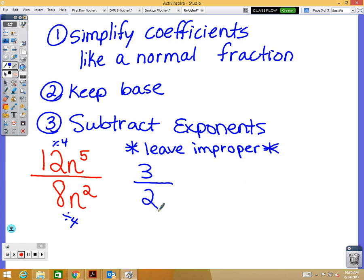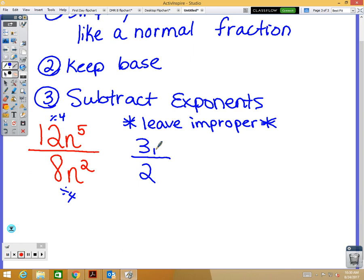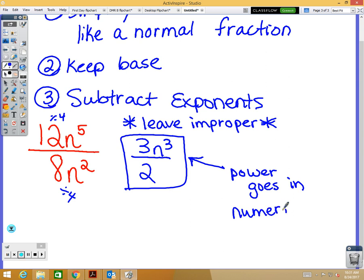And now we're going to do, keep our N and do 5 minus 2 is 3. But here is the question. Should I put N to the third power up here with the 3, down here with the 2, or out by itself? So, make sure you're listening, it goes in the numerator. So N to the third power goes up in the numerator. Power goes in numerator. And that part is important. Again, when we start talking about negative exponents, it's really important if it's in the numerator or denominator. Where the power is.